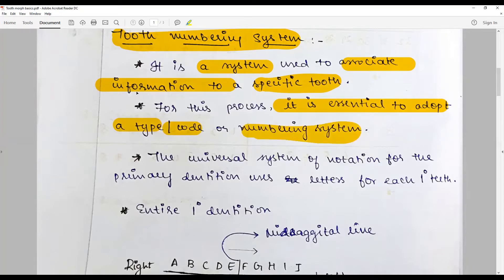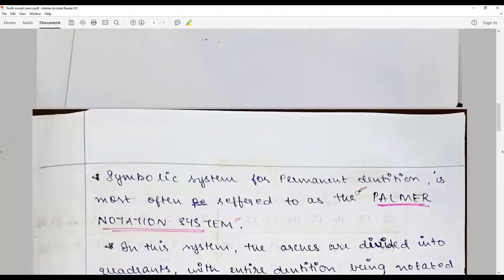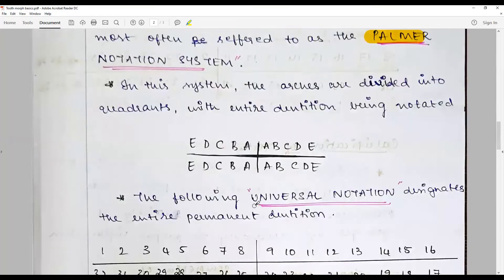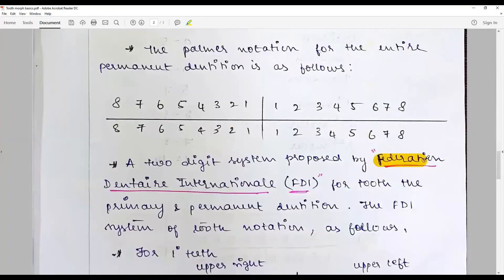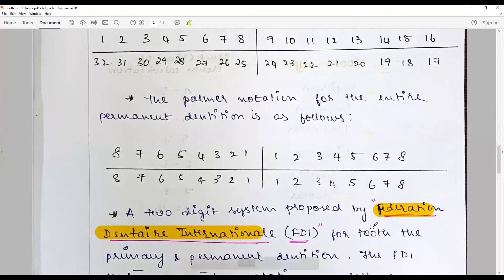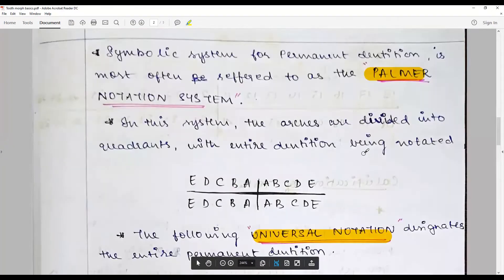There are three major systems. One is the universal system, the next is the Palmer notation, and the next is the FDI. So we have three prominent systems: the FDI nomenclature, the universal nomenclature, and the Palmer notation systems.